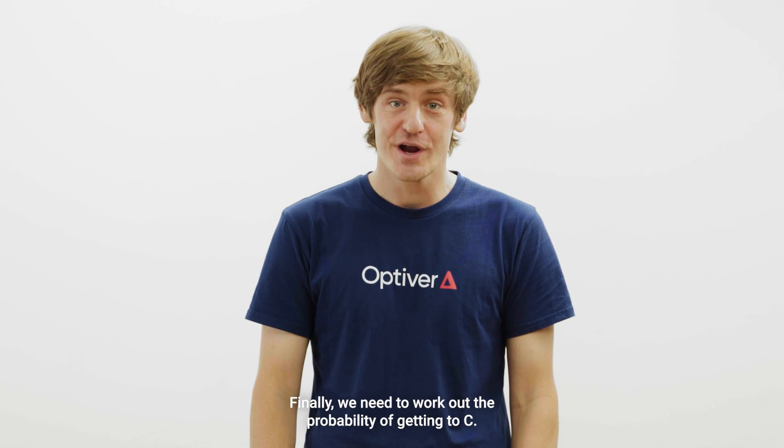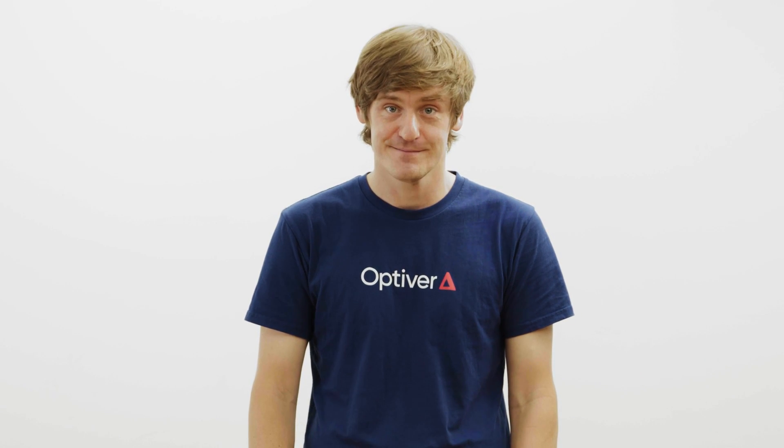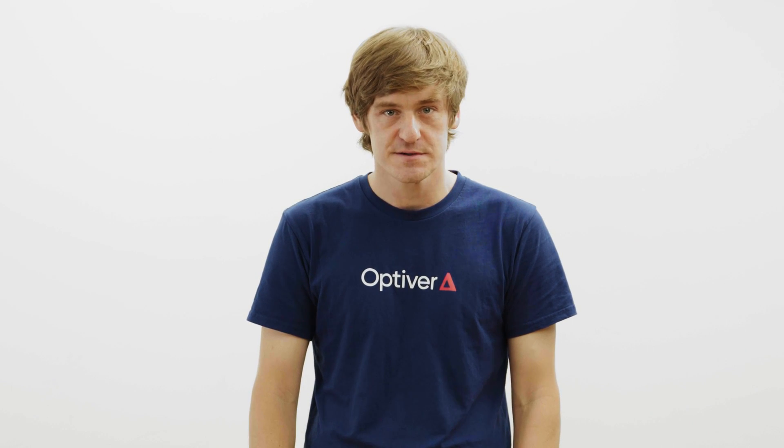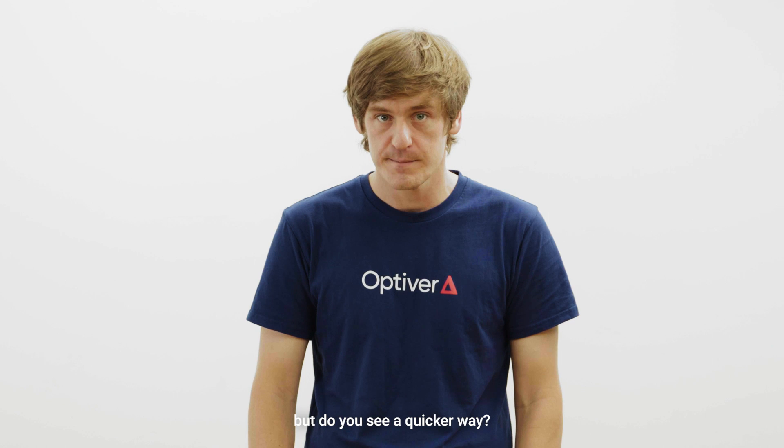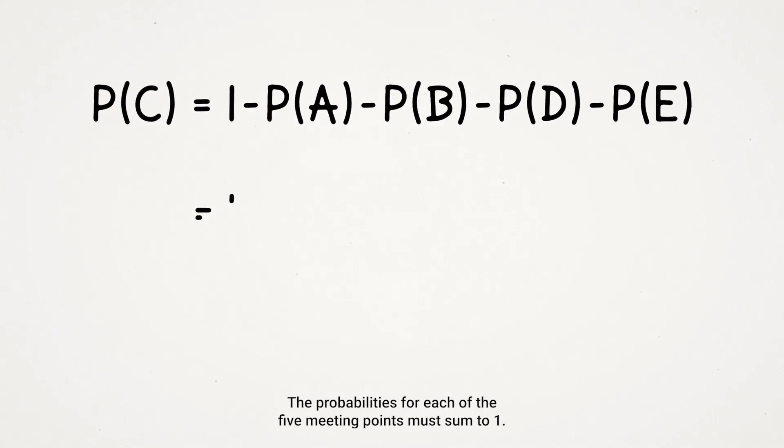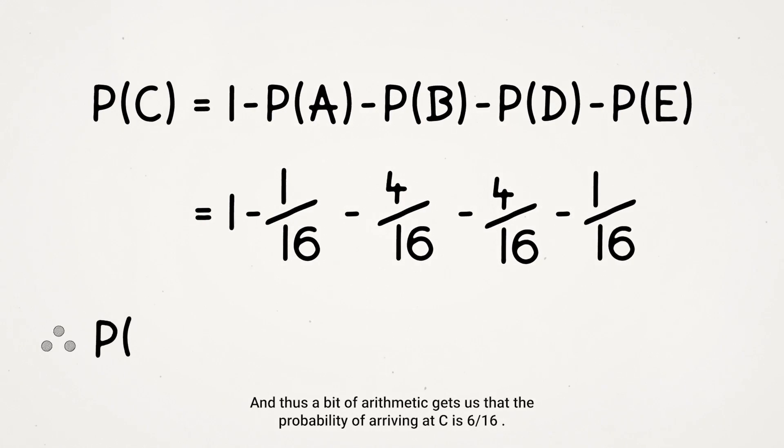Finally, we need to work out the probability of getting to C. I guess we could write down all possible coin sequences, but do you see a quicker way? It's just going to be the leftover. The probabilities for each of the five meeting points must sum to one. And thus, a bit of arithmetic gets us that the probability of arriving at C is 6 on 16.